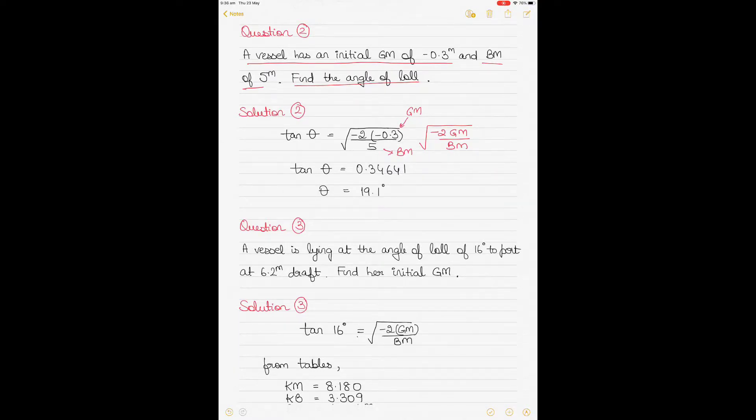So you put the GM value here. This is GM and this is BM. Solve the numerator. So minus 2 multiplied by minus 0.3, that will give you minus 0.6, then divide it by 5. And then find out the under root of that value. So minus 2 multiplied by 0.3 will be 0.6. So solve this equation. So you will have 0.6 on top, because negative and negative will become positive, and you divide it by 5.